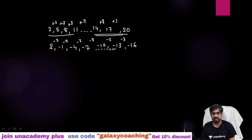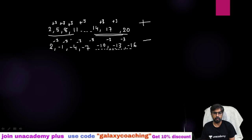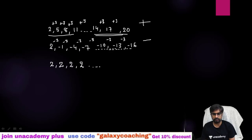So the next terms continue with minus 3 each time, giving minus 10, minus 13, minus 16, and so on. Here the progress was negative. This sequence is also an AP.